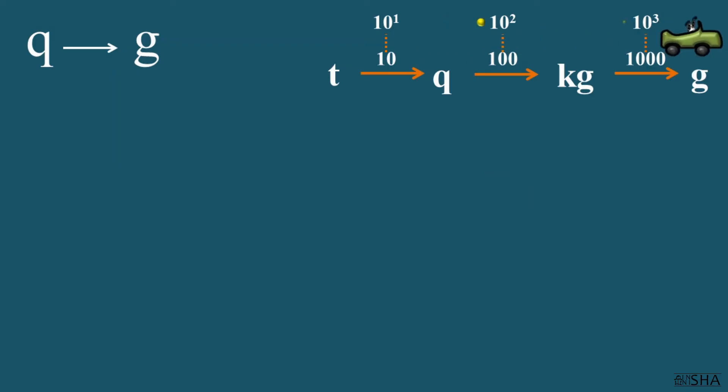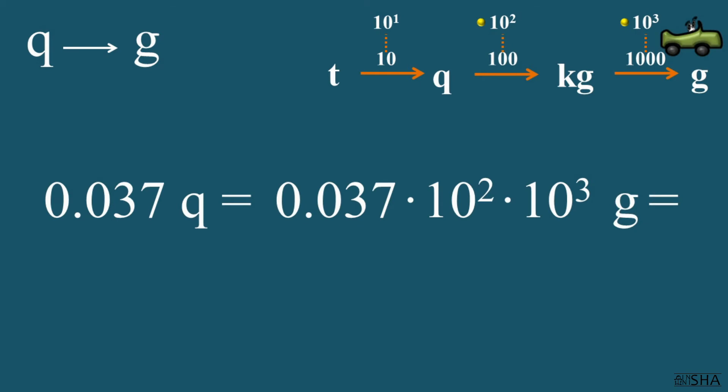Point zero three seven of a metric centenar needs to be converted to grams. Moving from centenars to grams we encounter two factors: ten to the second power and ten to the third power. Therefore, we multiply centenars by these factors. Making some calculations we get three thousand seven hundred grams.